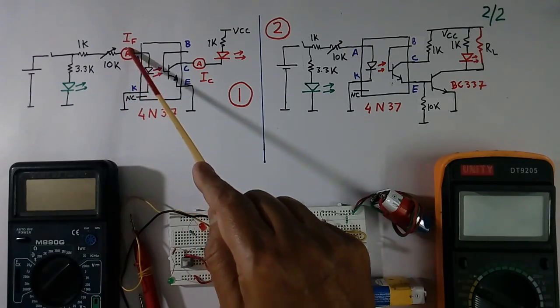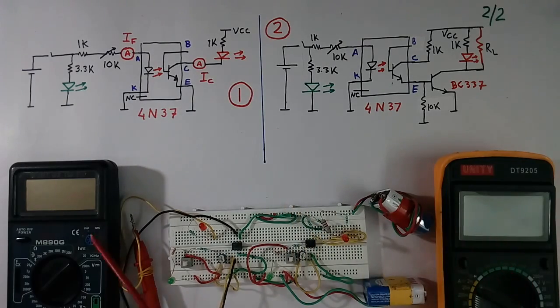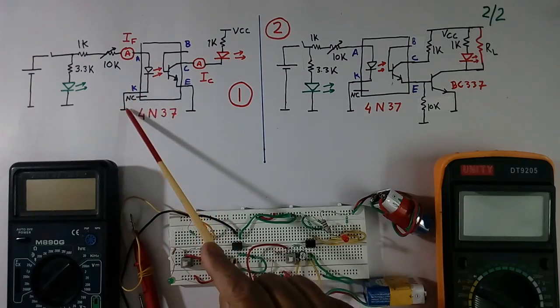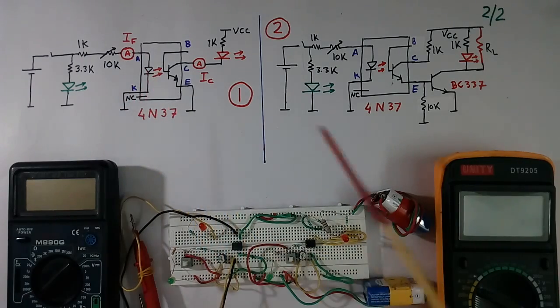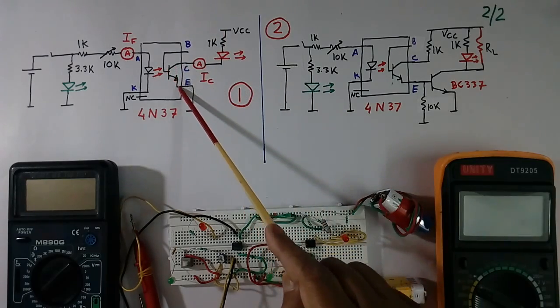And 2 ammeter are connected. This ammeter is this, this ammeter is this. This ammeter will read current flowing in LED. This ammeter will read current flowing in collector.